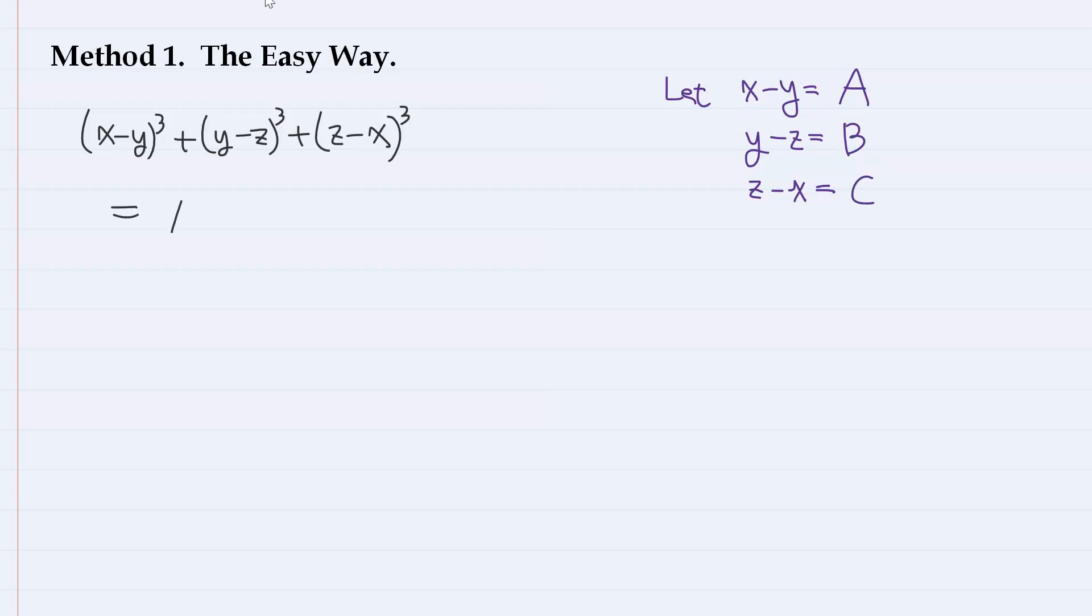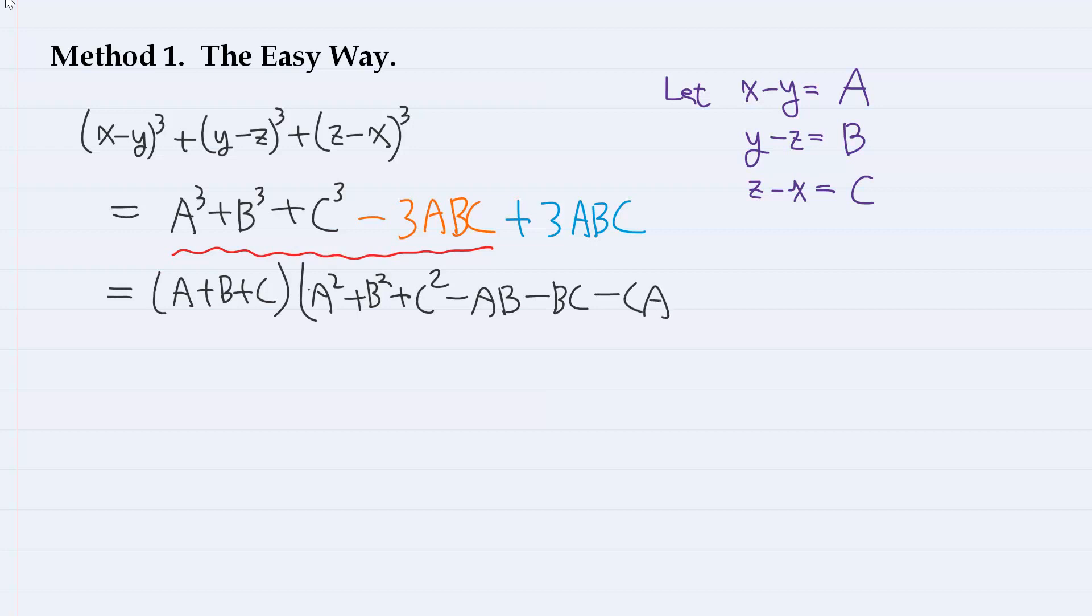Then, this expression becomes A³ + B³ + C³. And in order to use our famous formula, we subtract 3ABC, then add 3ABC. So, this part is our famous formula, which is (A + B + C)(A² + B² + C² - AB - BC - CA). And we have this part, so plus 3ABC.